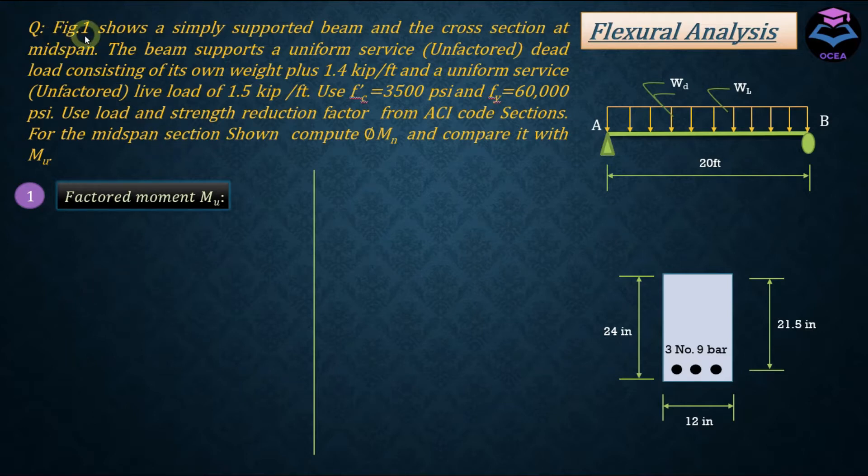The question here says that Figure 1 shows a simply supported beam and the cross section at midspan. We have a simply supported beam and this cross section has been taken from the midspan of this beam. The beam supports a uniform service dead load consisting of its own weight plus 1.4 kip per foot and a uniform service live load of 1.5 kip per foot. This beam is subject to a dead UDL as well as live UDL of certain value.